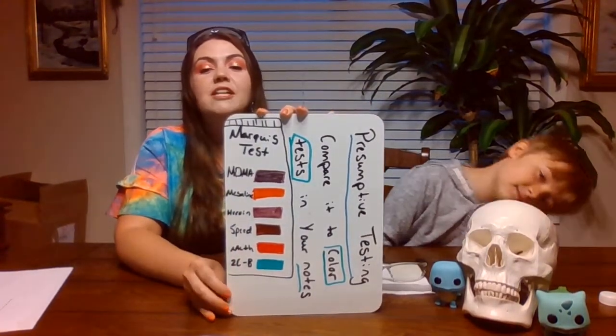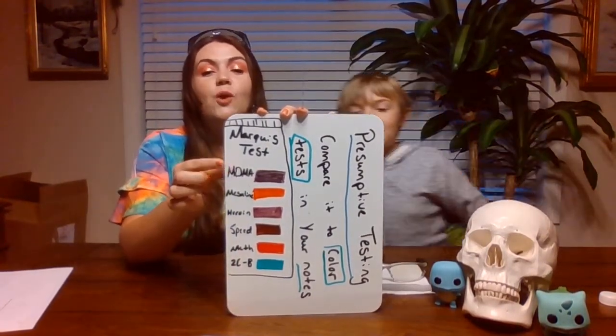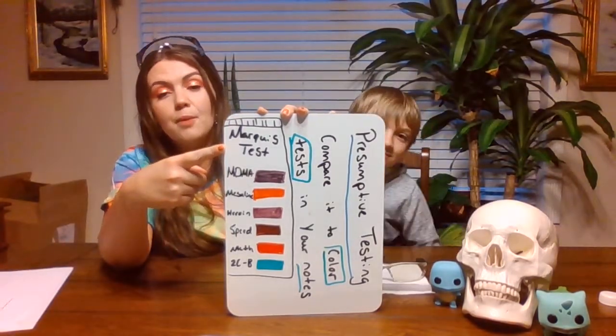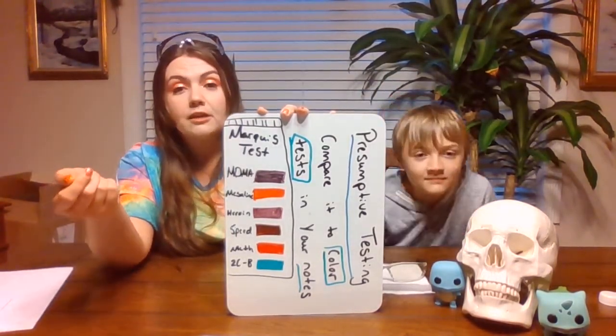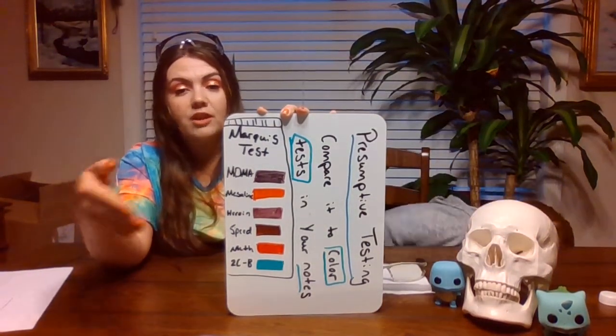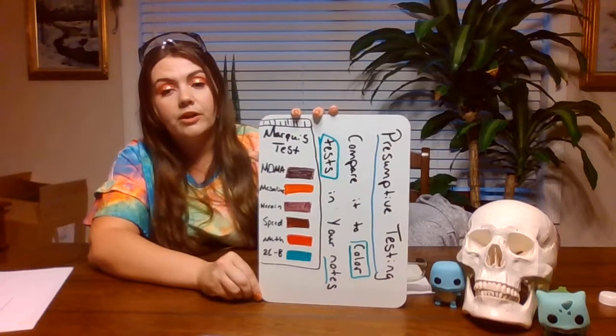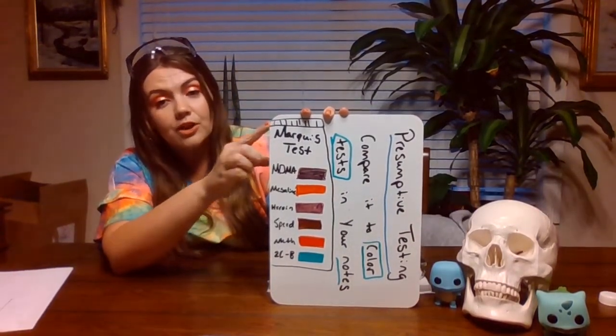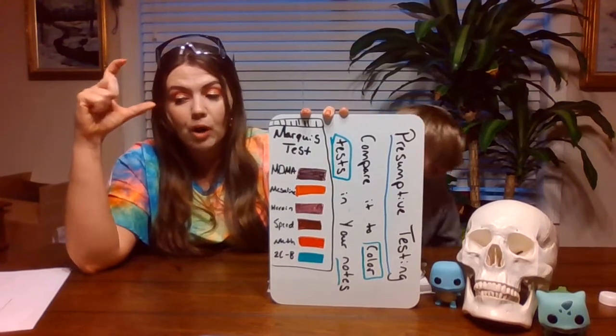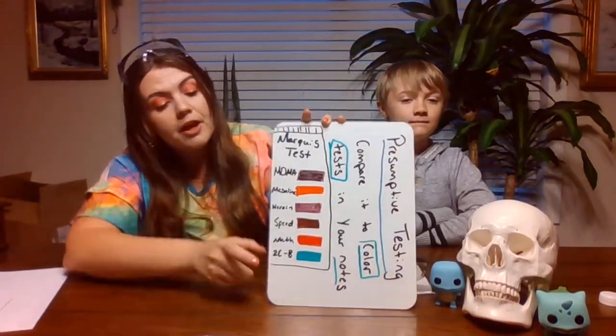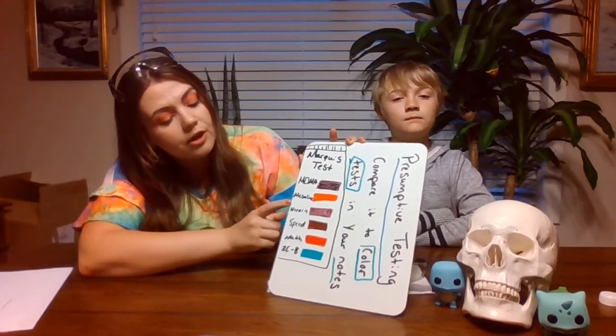So a badly drawn Marquis test right here. So a Marquis test is an example of a presumptive color test. Basically if you were at a crime scene and you thought the suspect had drugs on them, let's say you thought they had heroin. So if you thought they had heroin, you'd put a little bit of their drug inside this container. It's like a little bottle, a little vial, and you would put it in there, shake it up, and if it turned the color right here...